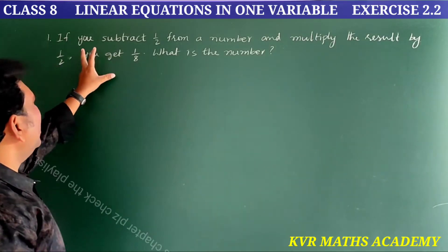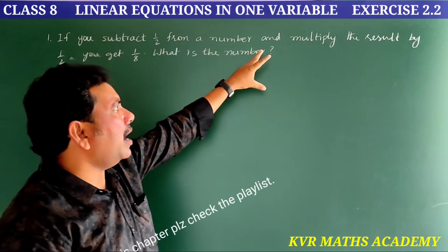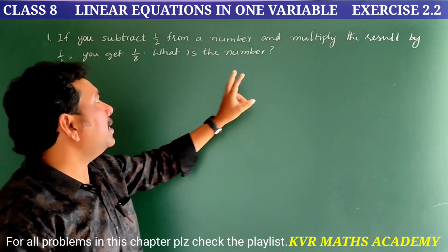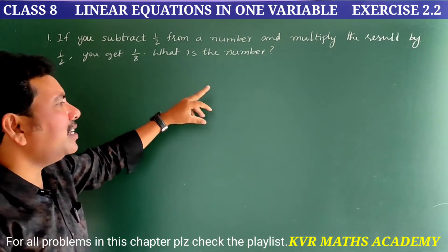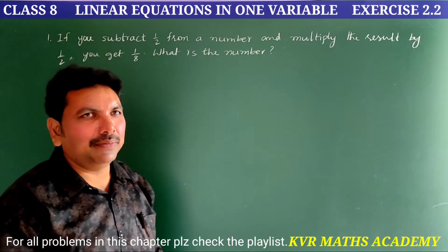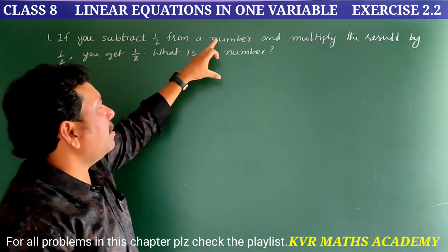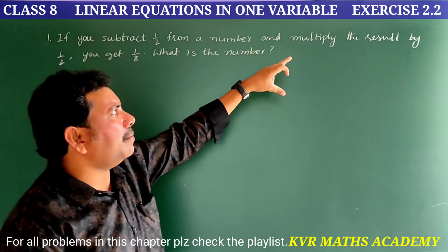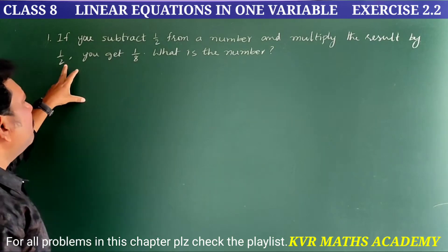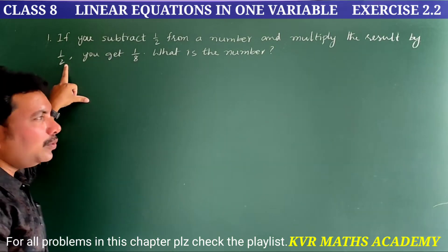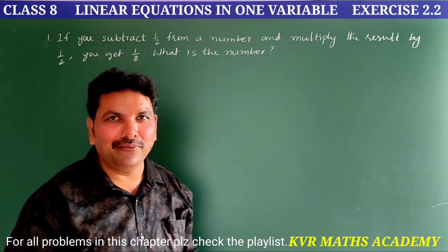First question: If you subtract half from a number and multiply the result by half, you get 1/8. What is the number? If you subtract 1/2 from your number and multiply the result by 1/2, you get 1/8.